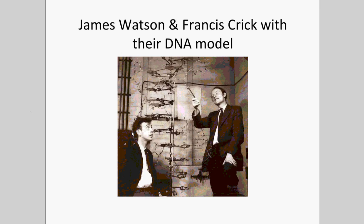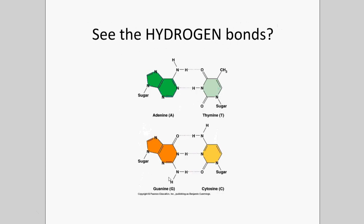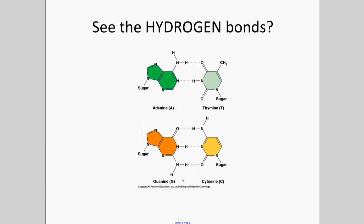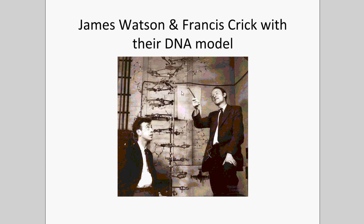Watson and Crick came along and in 1953 constructed the first accurate model of the DNA molecule. They used Chargaff's work, Franklin's work, and all the work that came before them to fill in the gaps. They confirmed A's pair with T's, C's pair with G's, held together with hydrogen bonds, forming that double helix shape we are so familiar with. Here they are actually standing inside the model that they created.